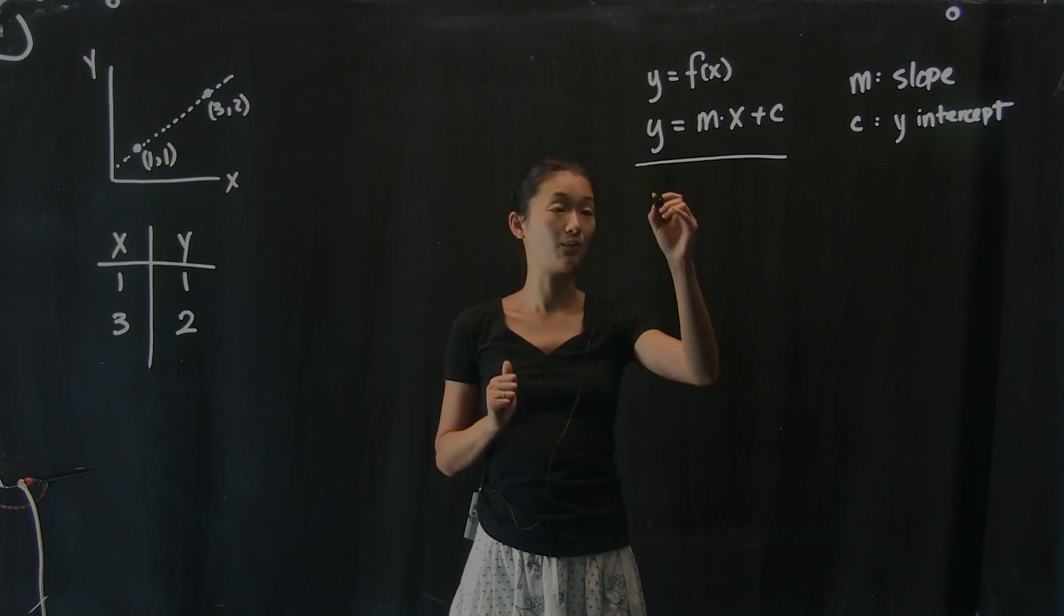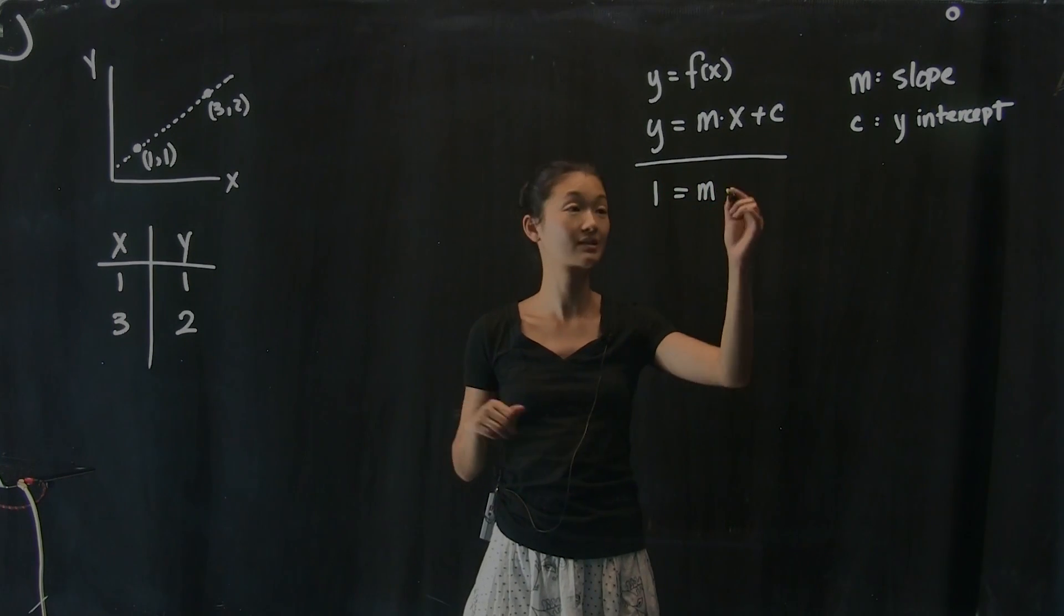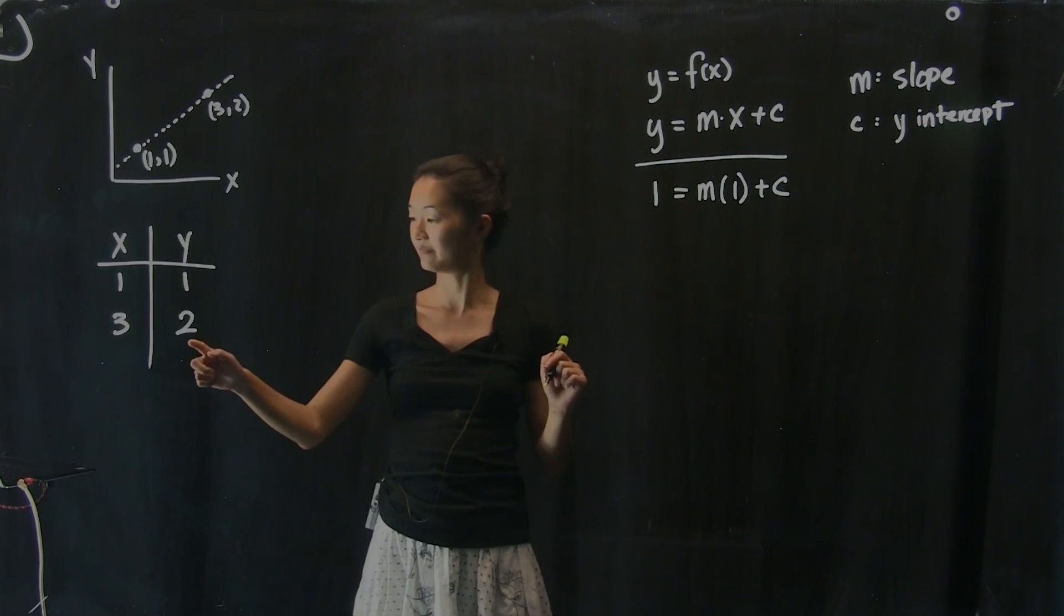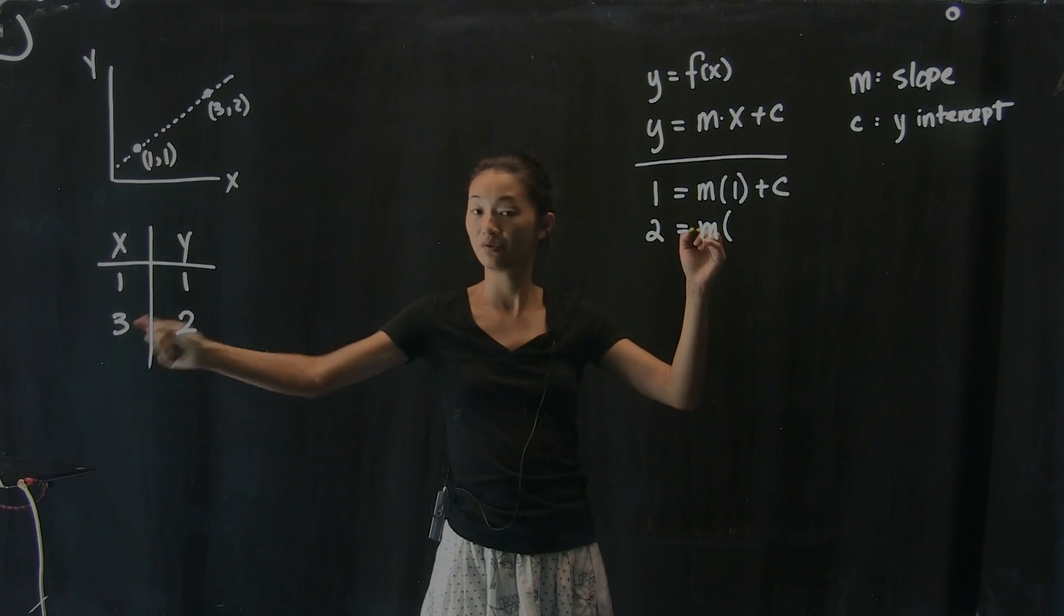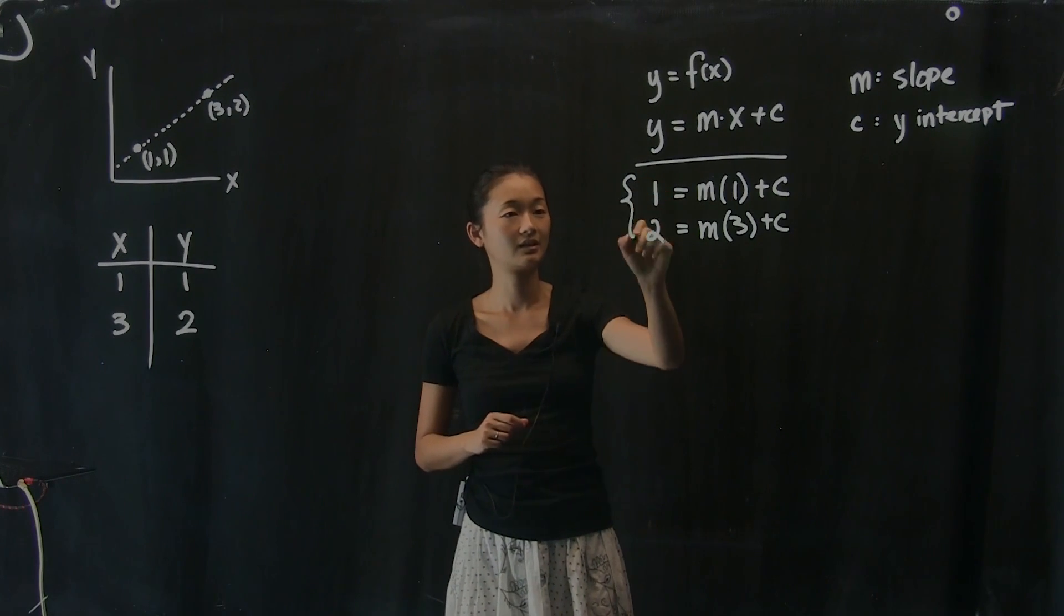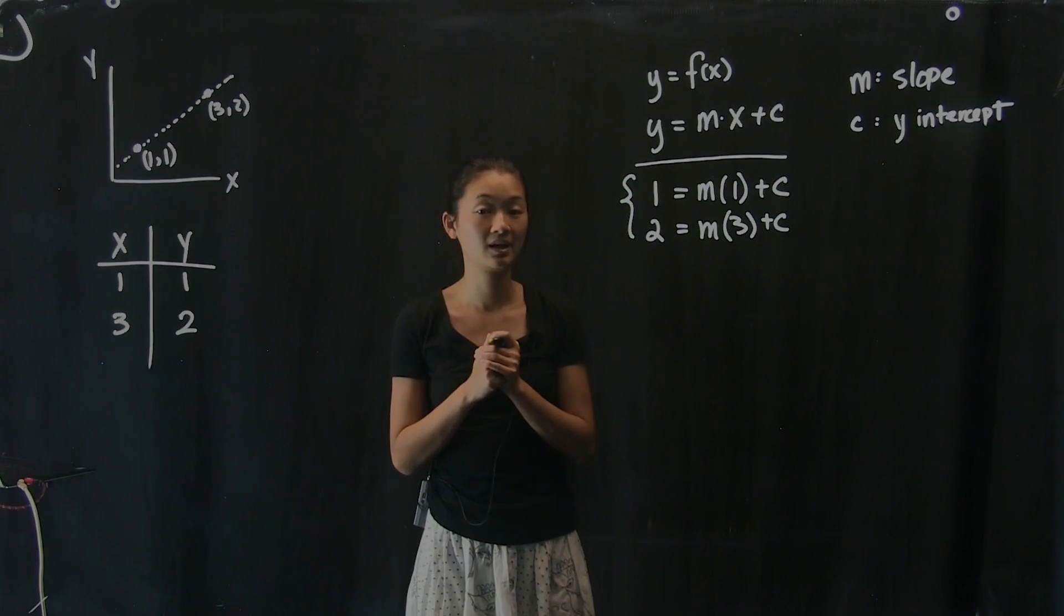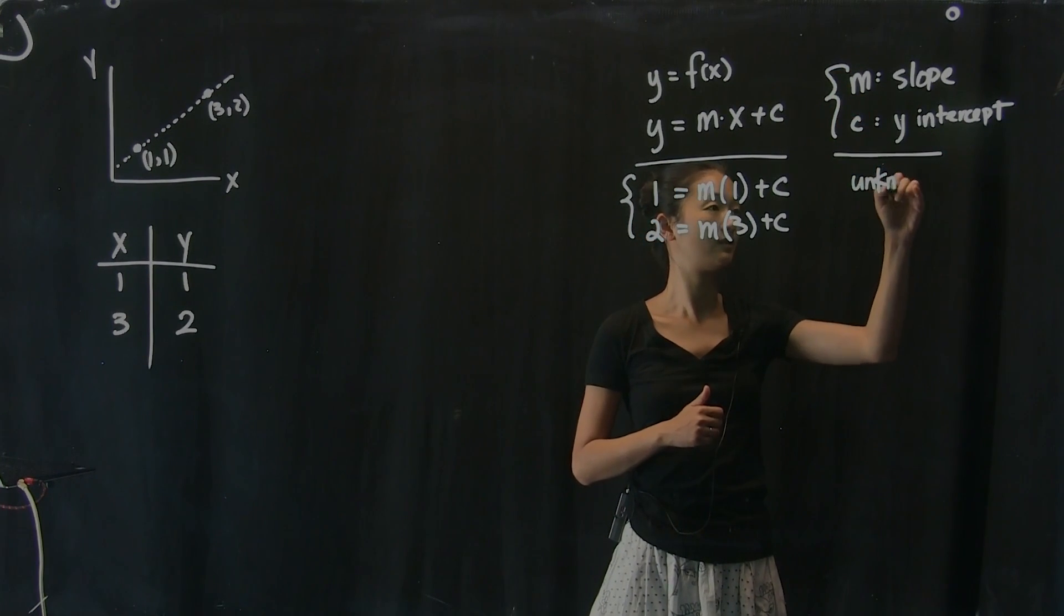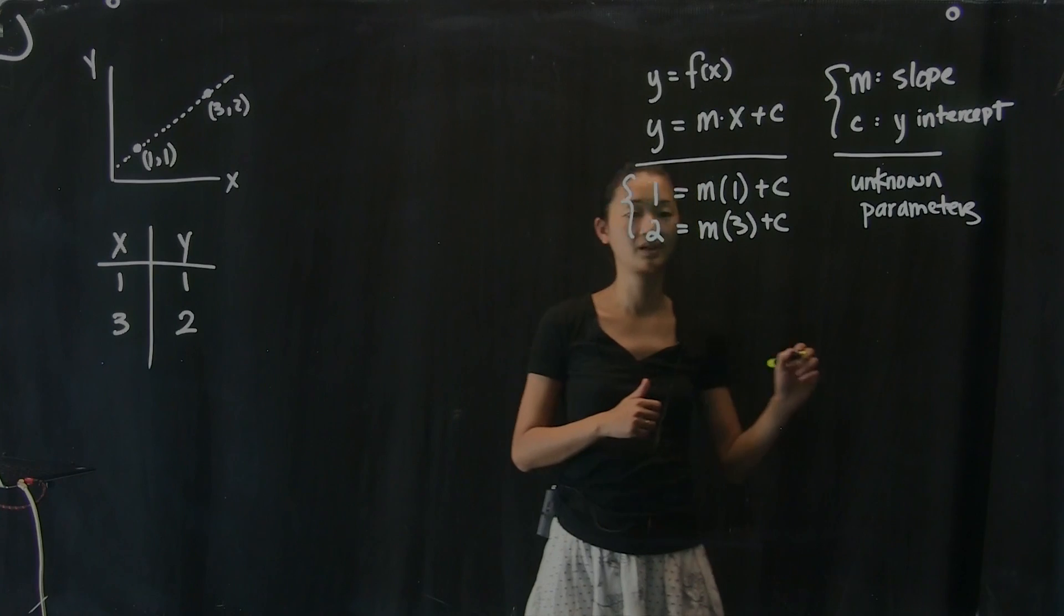Here's what it looks like. I want, the first point is 1 equals some m, I don't know what m is, times x equals 1 plus c has to equal the first point, y equals 1. Now, the second point, y equals 2 equals m times 3, again, plus c. So these two equations is a system of equations that we have to solve in order to figure out what is the line that goes through my two points. Now, to be explicit, these two are my unknown parameters, the things that I have to solve for.